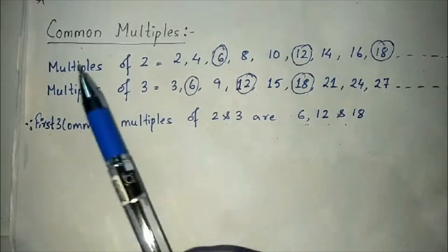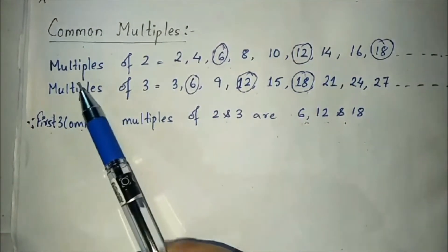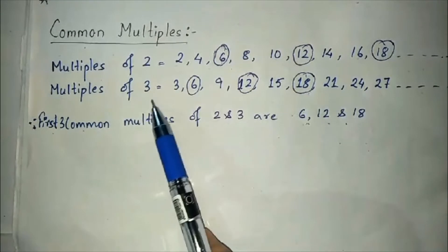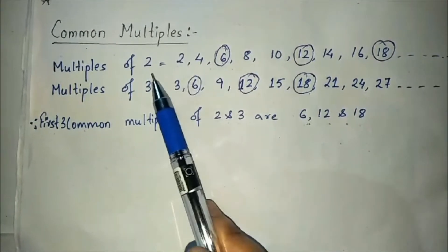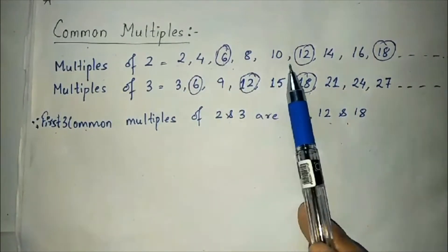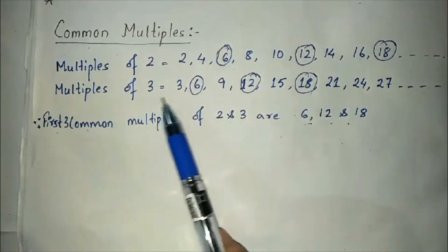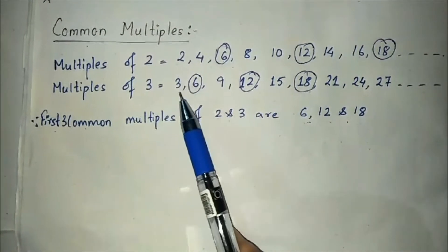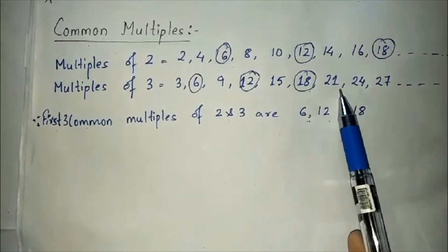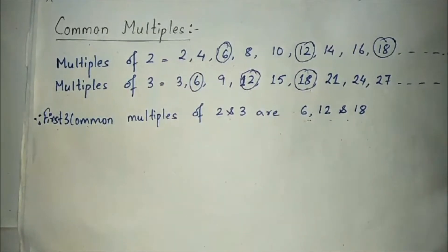Now let us see what are common multiples. Let us take an example of multiples of 2 and multiples of 3. Multiples of 2 are: 2, 4, 6, 8, 10, 12, 14, 16, 18 and so on. Multiples of 3 are: 3, 6, 9, 12, 15, 18, 21, 24, 27 and so on.